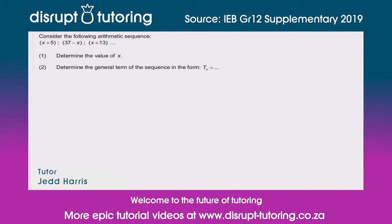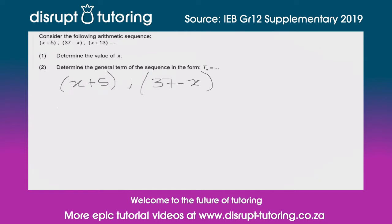Hey peeps, it's Jed here from Disrupt Tutoring, and as always it's such a pleasure to join you today. We're going to deal with an arithmetic sequence, and with that in mind let's dive straight in. We've got the following pattern: x plus 5, then 37 minus x, and then x plus 13.